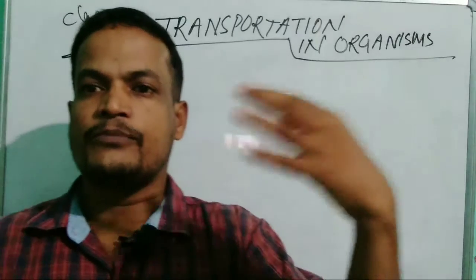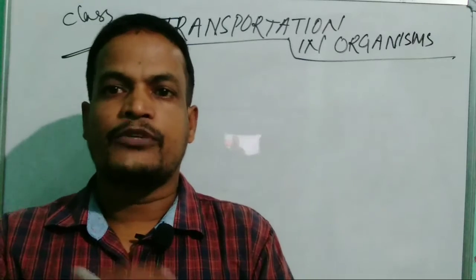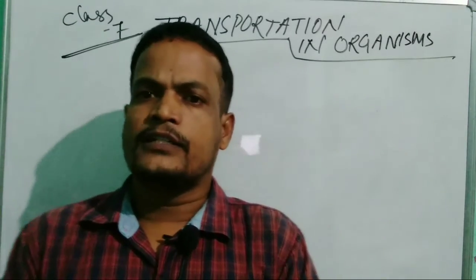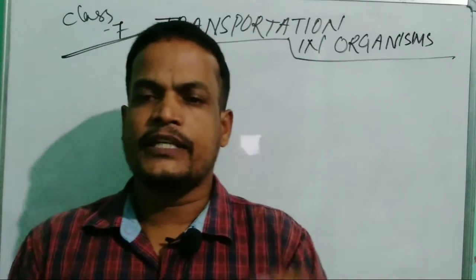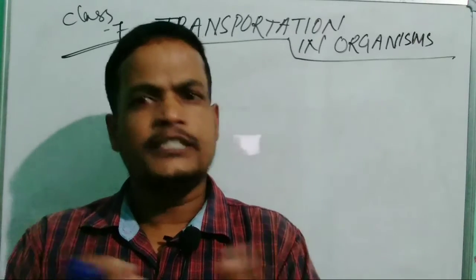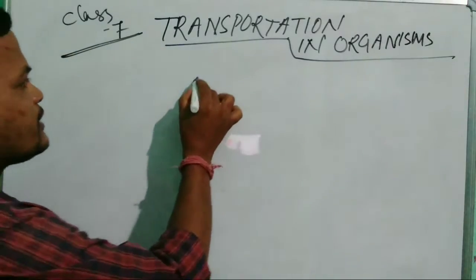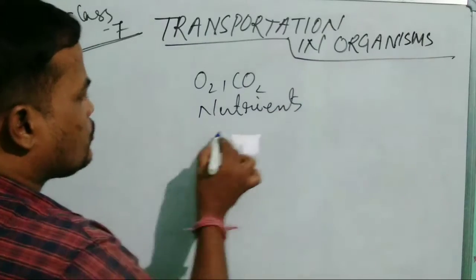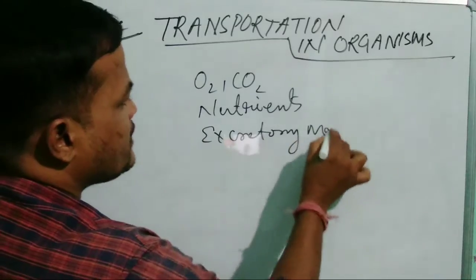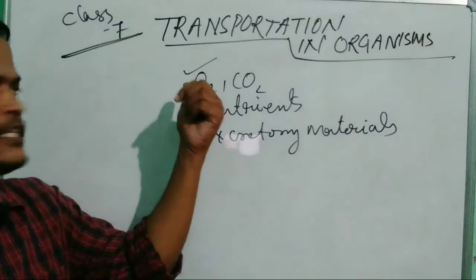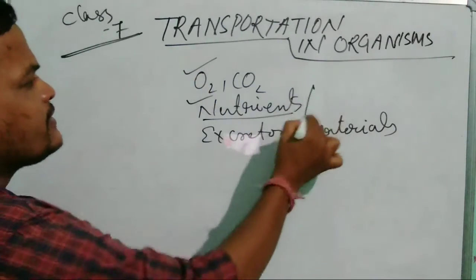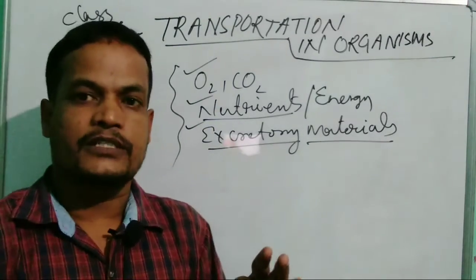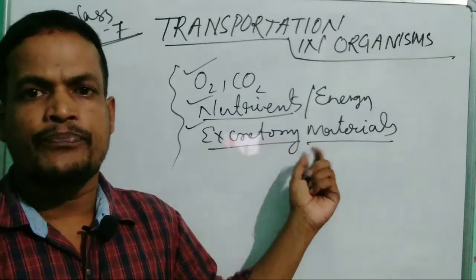Inside the body, oxygen is transported for respiration, carbon dioxide is transported, blood moves carrying nutrients and oxygen, and waste materials like urea are collected and delivered for excretion. Transportation is most vital — without it, respiratory gases, nutrients, and excretory materials cannot reach the right places. Whether it is plants or animals, transportation is essential for respiration, nutrition, and excretion.